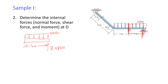We also have internal forces to include at the cut section. We potentially have a normal force N, directed away from the surface. We have a shear force V, pointed so that it tends to rotate the member clockwise. Finally, we have an internal bending moment M directed as shown. We also add our coordinate system x and y. With forces, distances, and the coordinate system included, our free body diagram is complete.